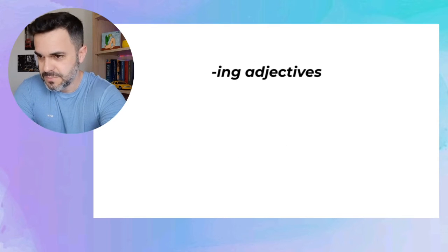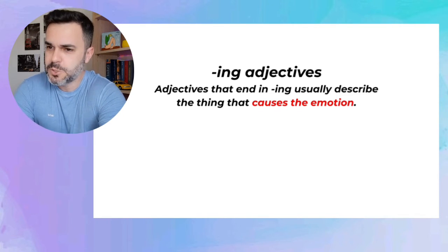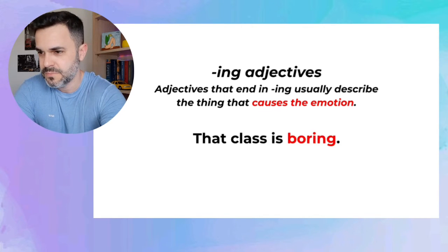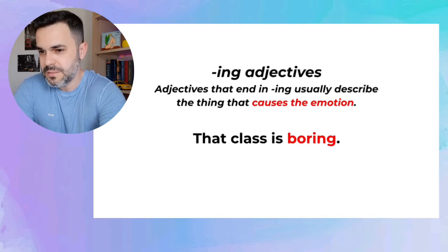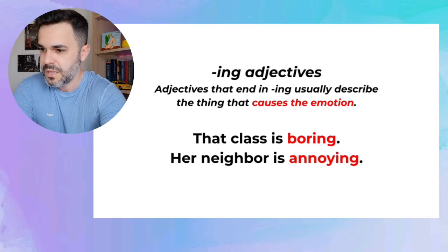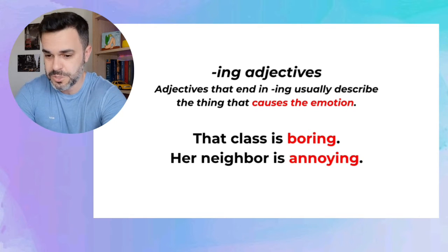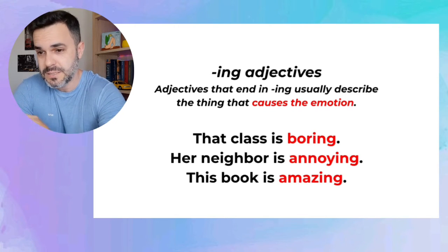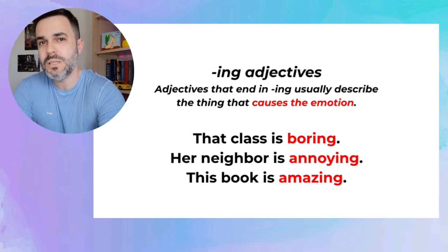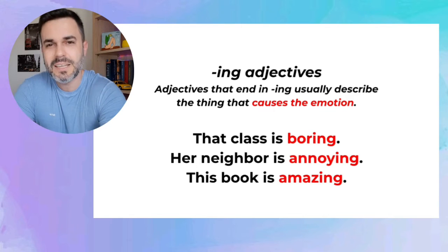Step number two: ING adjectives. Adjectives that end in ING usually describe the thing that causes the emotion. Like here — the class is boring. When I say the class is boring, I mean the class makes me feel bored. When I say her neighbor is annoying, her neighbor is the reason why she feels annoyed — her neighbor causes that emotion. And if the book is amazing, it's because it makes me feel amazed. The ING adjectives are not the only participle adjectives that exist — I may make a video specifically about all of them. Don't forget to like and subscribe!